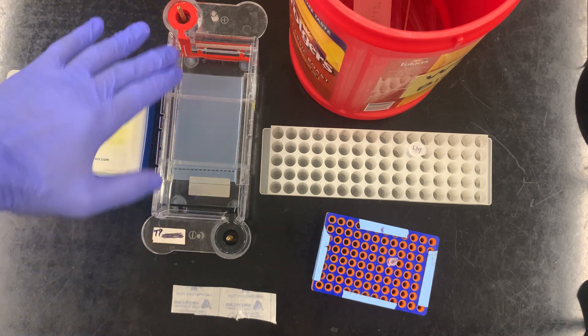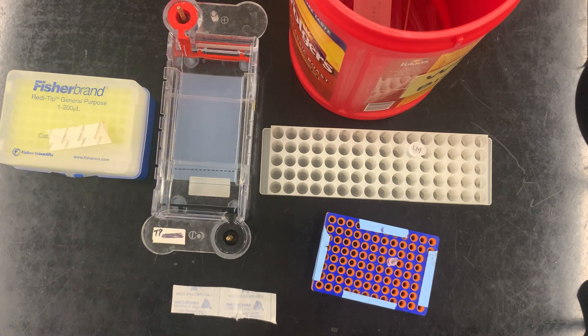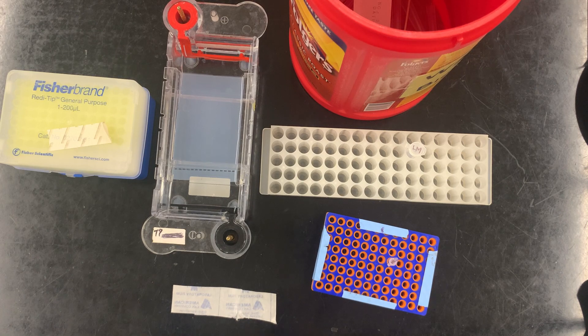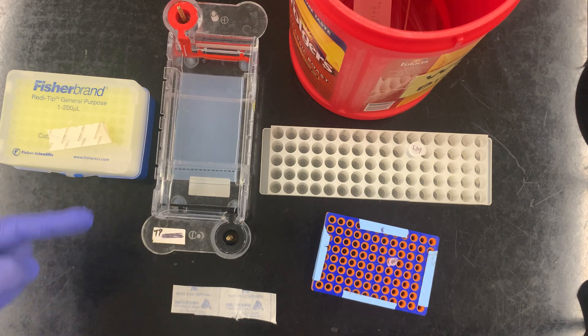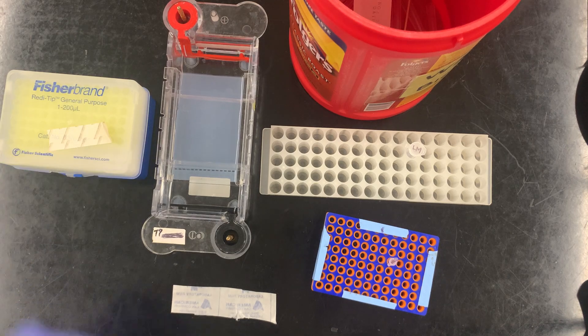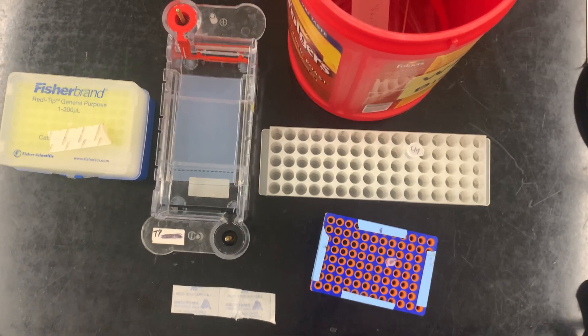Here's our agarose gel. It looks very much like very firm jello, but it is porous. The challenge here is that these are our wells, and so that's where we're going to stick our DNA sample. Let me bring the camera in a little bit closer.